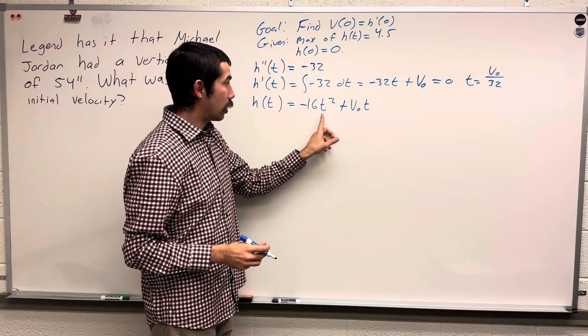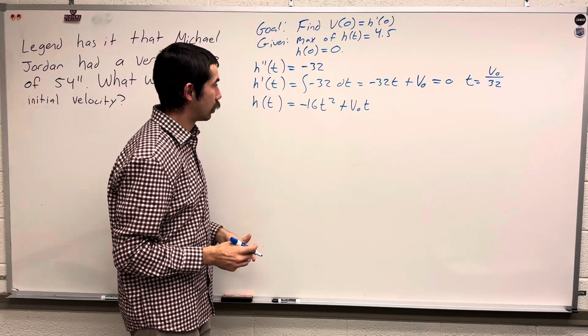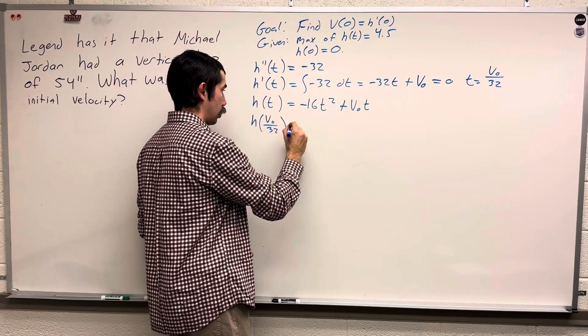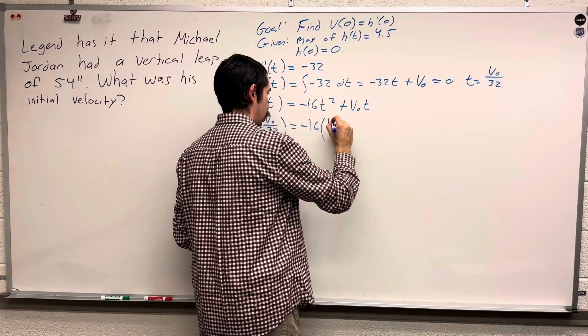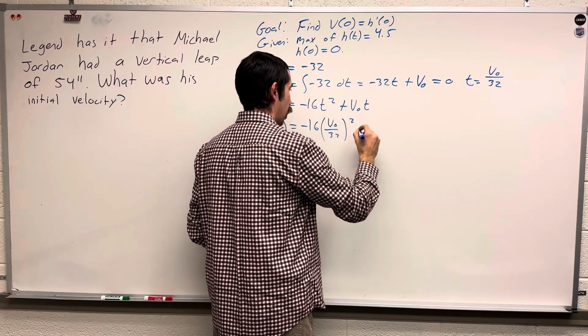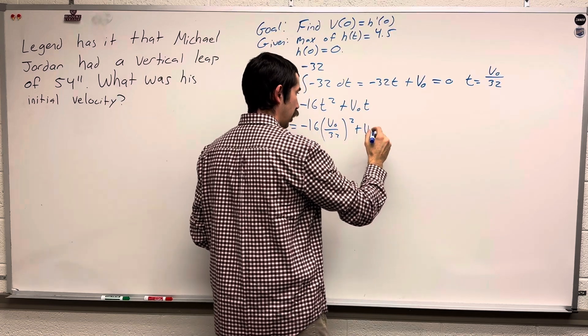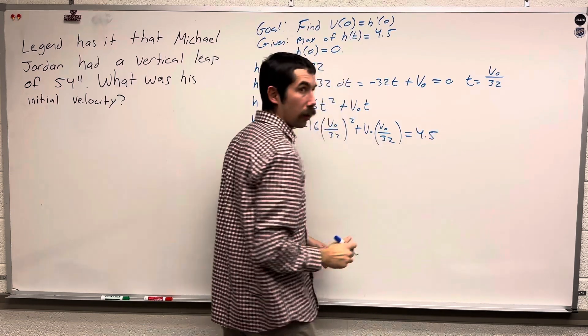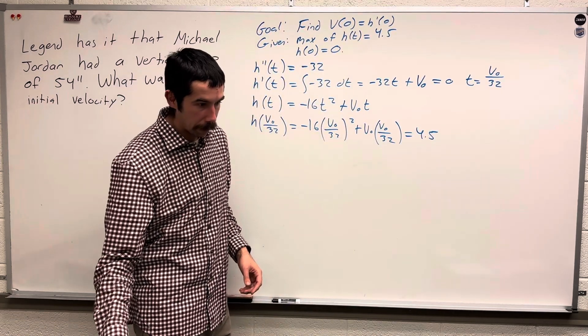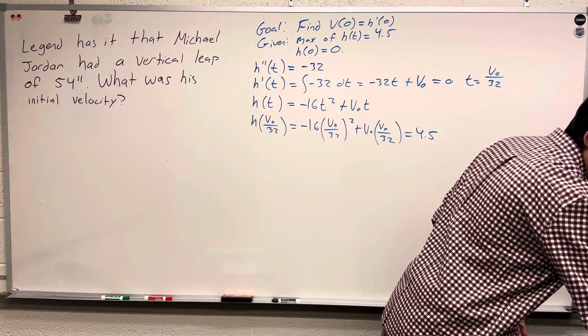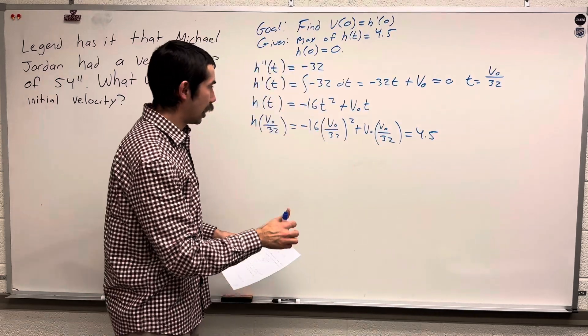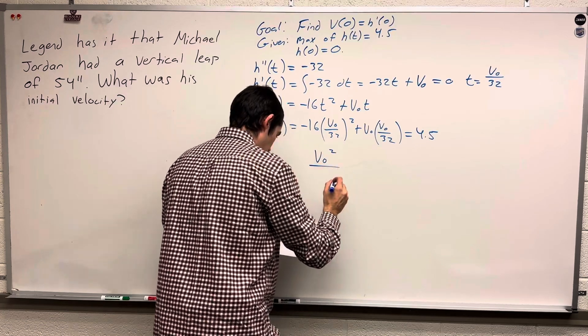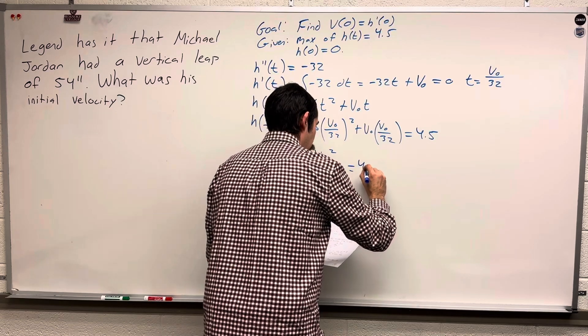And then we're going to sub that into t here and set it equal to 4.5 feet to solve. So h of v0 over 32 is negative 16 v0 over 32 squared plus v0 times v0 over 32. And we're setting that equal to 4.5. I don't want to bore you with the algebra, but this combines to v0 squared over 64 equals 4.5.